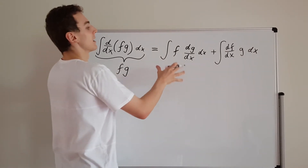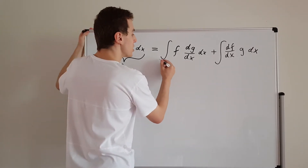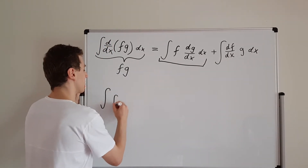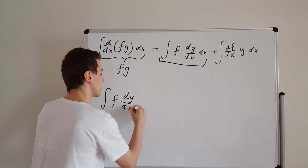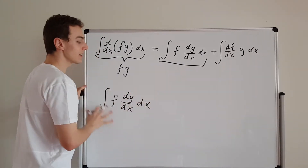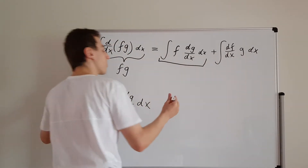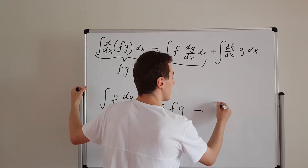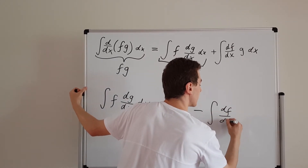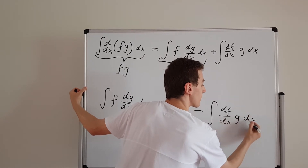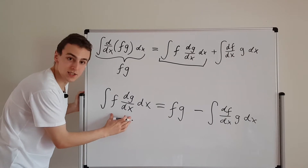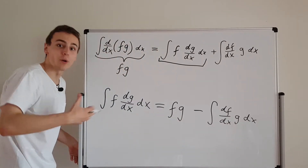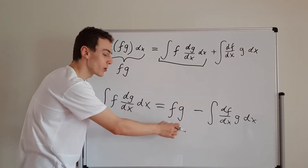Now we can rearrange. If we solve for the integral of f times the derivative of g with respect to x and move the other integral to the other side, we get: the integral of f times dg/dx dx equals the product f times g, minus the integral of df/dx times g dx. We've swapped the derivative, but in doing so we introduced a minus sign and the boundary term — the product of the two functions.